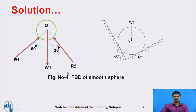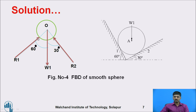This is the free body diagram of this particular figure. The center point is O. Weight acts in the downward direction. R1 is the first reaction at the first contact surface, and R2 is the second reaction at the second contact surface. Now we apply Lamy's theorem. All forces are directed toward or away from the center point. According to that geometry, R2 is 30 degrees with respect to the y-axis and R1 is 60 degrees with respect to the x-axis.